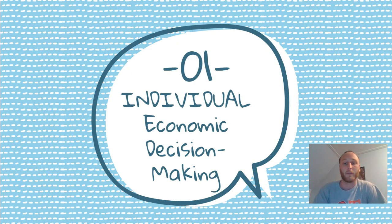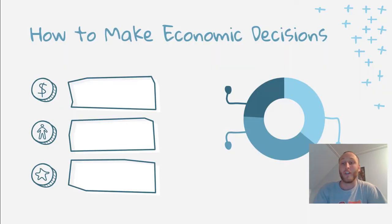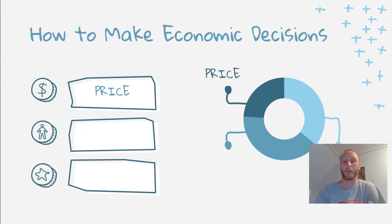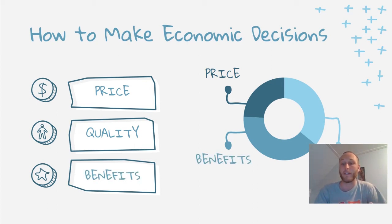So that's going to be our goal for today. Number one: individual economic decision making. When you are making a decision that affects your money and purchases, when you're trying to buy a product, there are three major things you're going to want to consider. First, you need to think about the price of whatever item or service you're purchasing, the quality of that product or service, and the benefits that product provides to you.